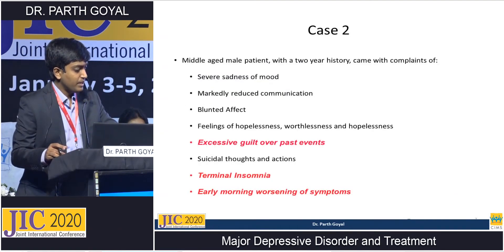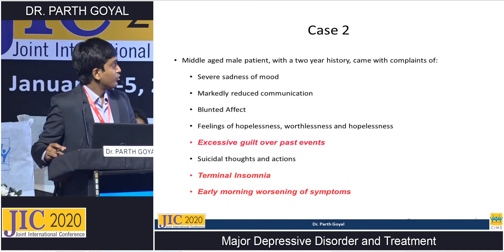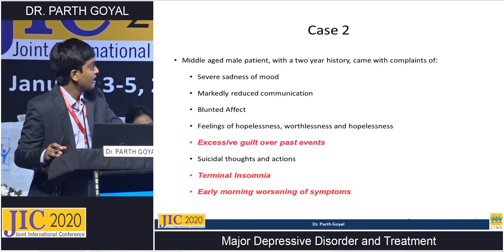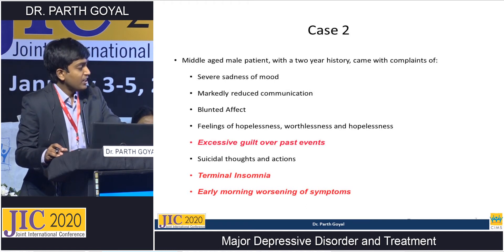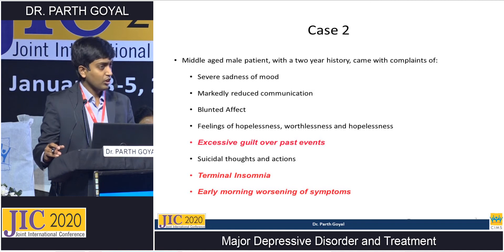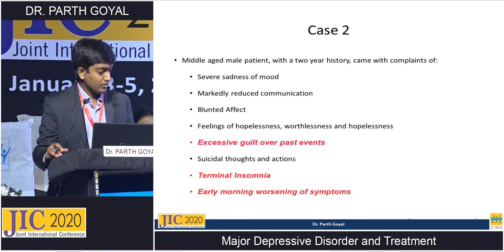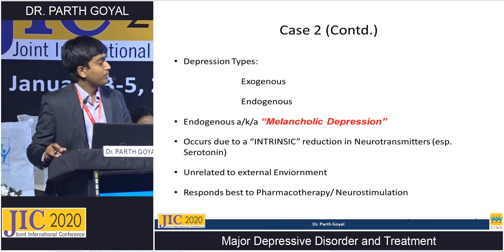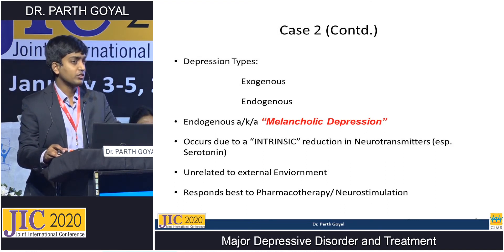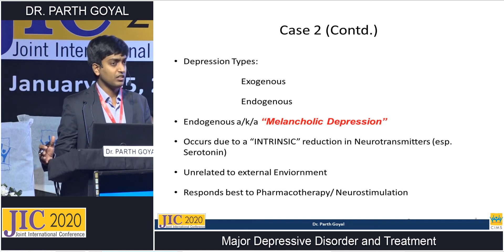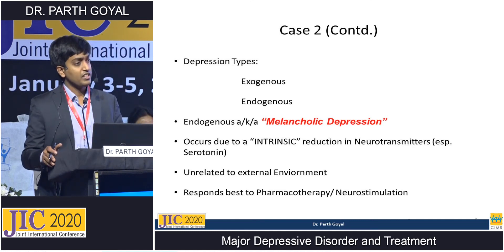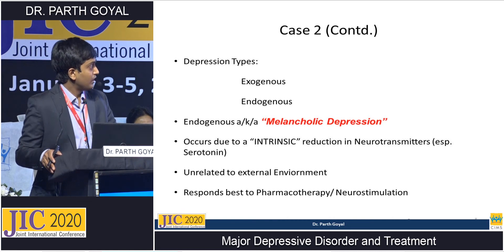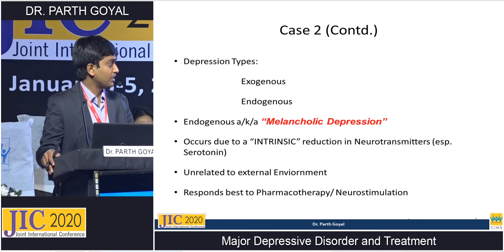Moving to the second case: a middle-aged male patient with a two-year history of severe sadness of mood, markedly reduced communication, and blunted affect — a state where there are absolutely no expressions on the face. He has feelings of helplessness, worthlessness, hopelessness, excessive guilt over past events, suicidal thoughts and actions, terminal insomnia, and early morning worsening of symptoms. These three highlighted features are the triad indicating severe depression, known as melancholic depression. Depression was earlier categorized as exogenous or endogenous, the latter due to intrinsic reduction in neurotransmitters, specifically serotonin. Melancholic depression responds best to aggressive pharmacotherapy and neurostimulation.